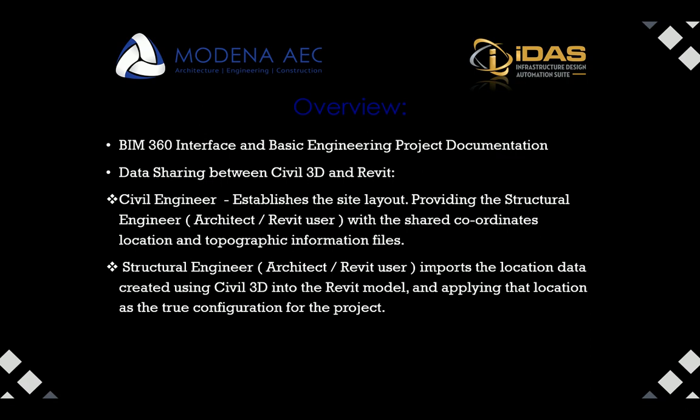Then we're going to move on to actual data sharing between Civil 3D and Revit. There are two possible ways of doing it. The civil engineer establishes the site layout and provides the structural engineer or Revit user with shared coordinates, location, and topographic information files. That information is then sent to the structural engineer, who imports the location data from Civil 3D into the Revit model, applying the location as the true configuration for the project. This workflow helps you do more accurate work as fast as possible.